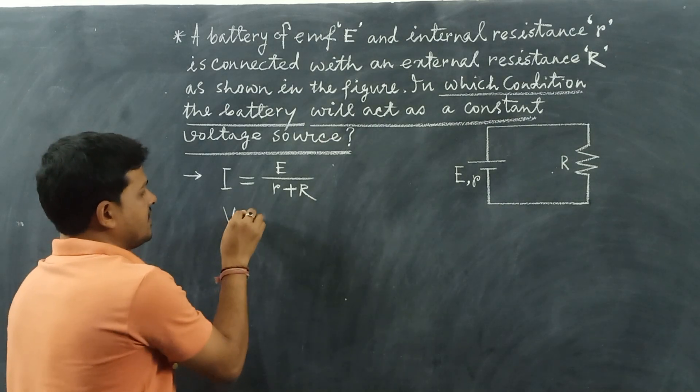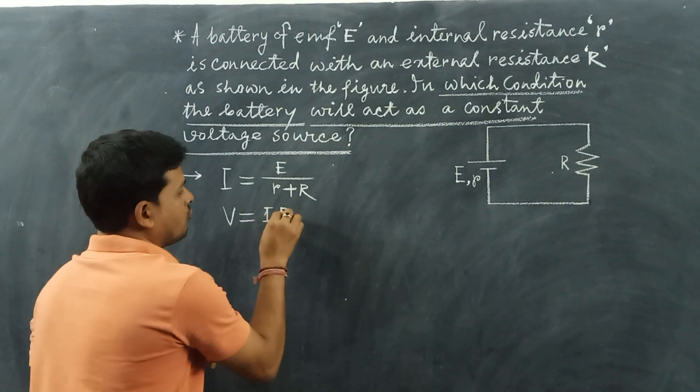From Ohm's law, we can write V equals I R.